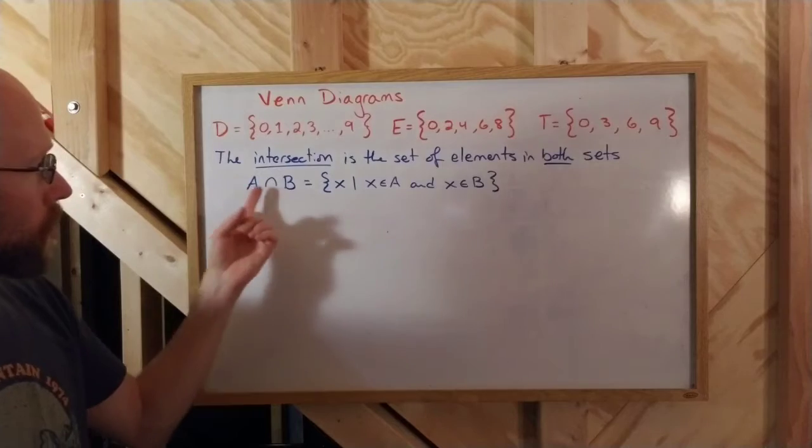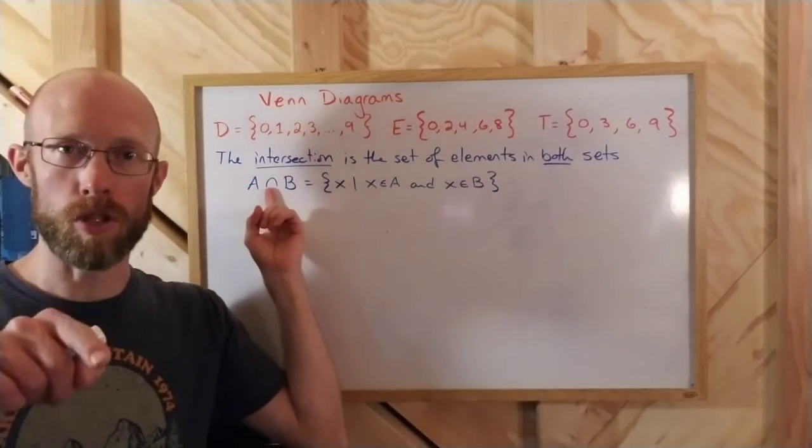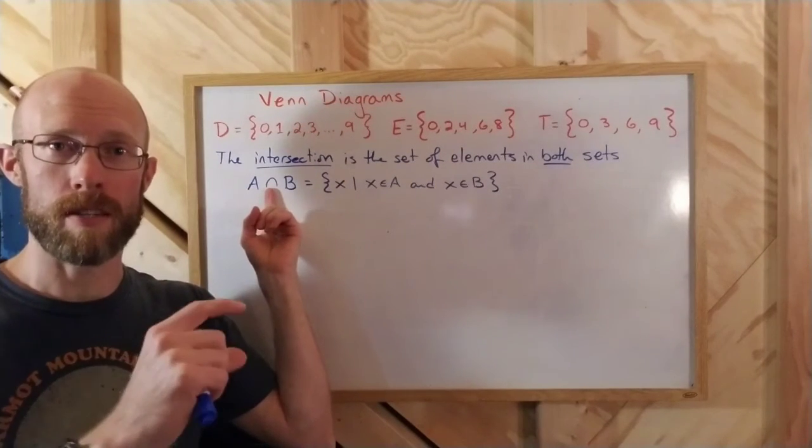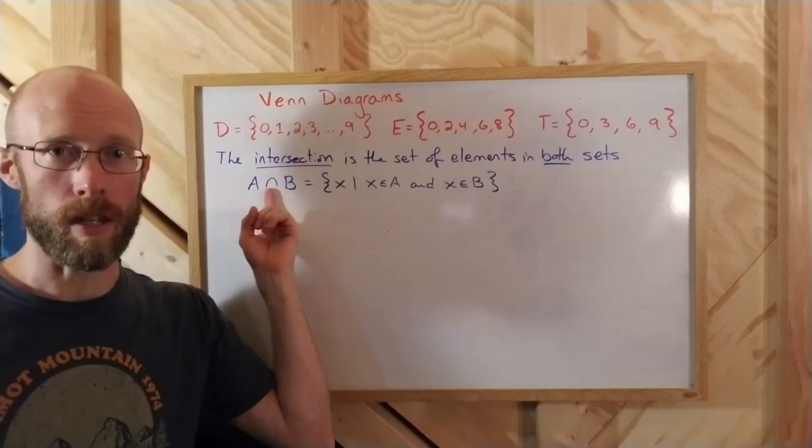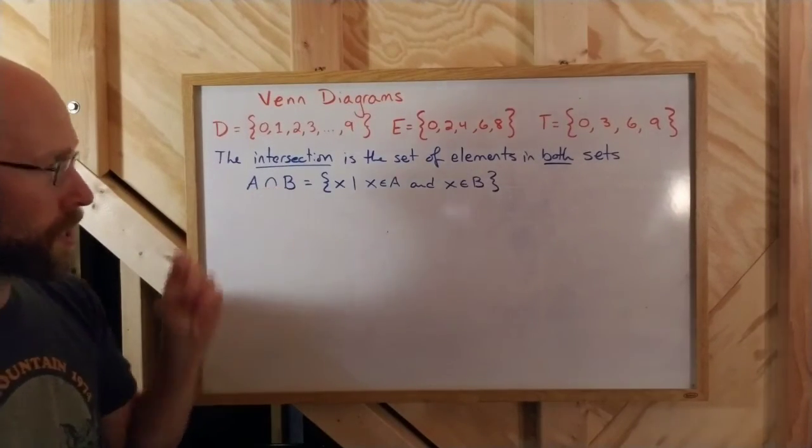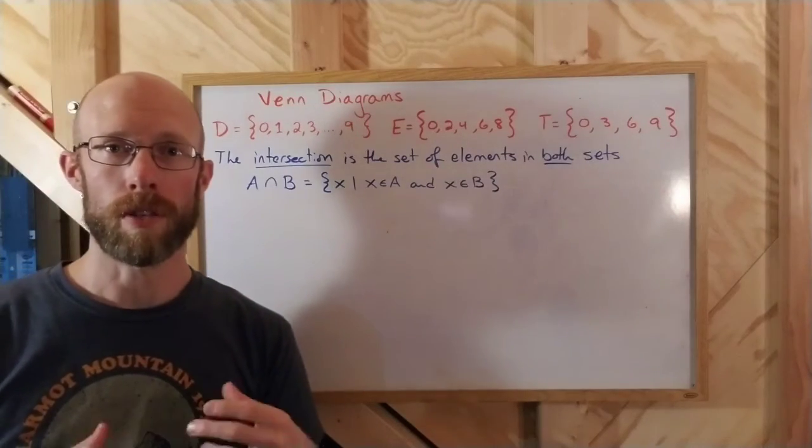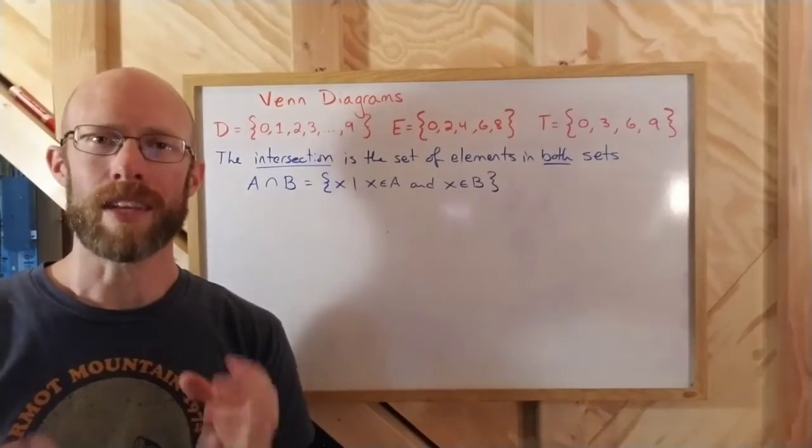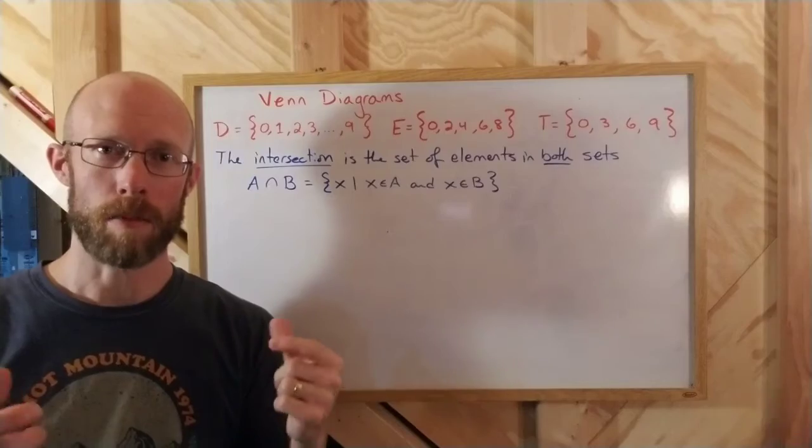The notation that we use is an upside down U shape. It kind of looks like the subset symbol turned on a 90 degree. So A intersect B. That's all the elements that are contained in both sets.